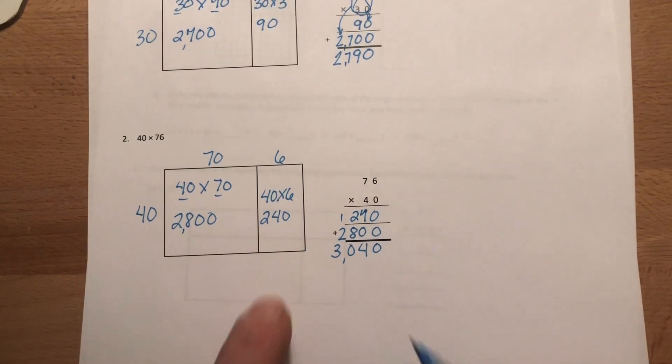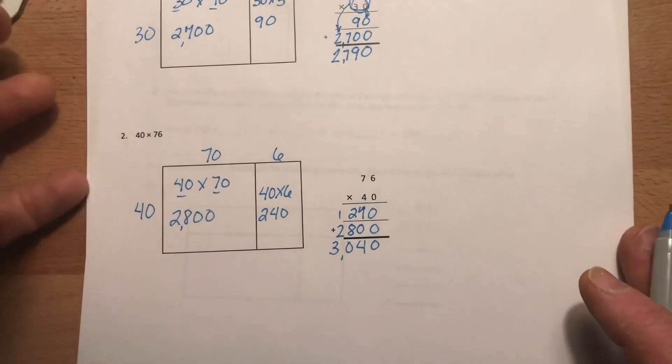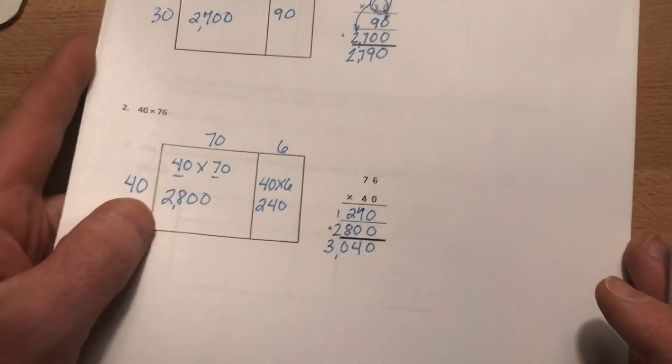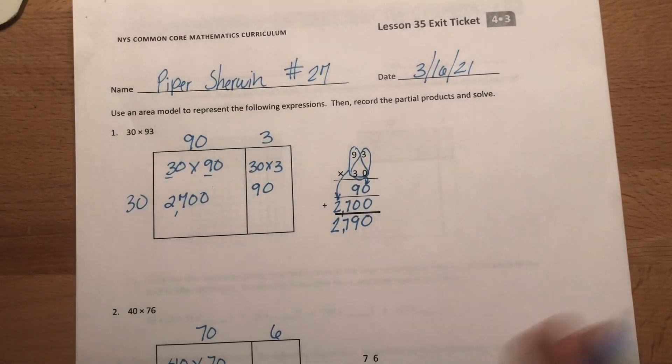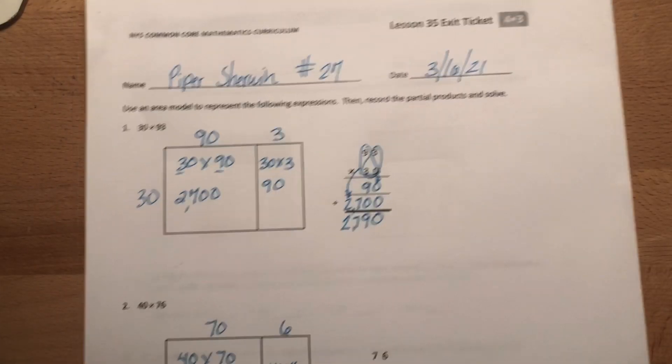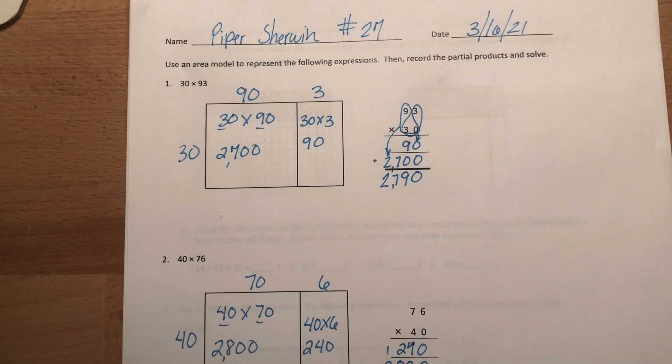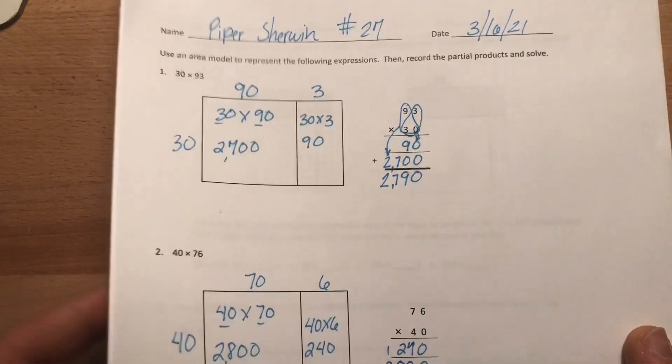Do the partial products over here. End up with 3,040. All right. Hopefully, you did well on that today. Today, we're going to do something very similar, but not with products of 10. We're going to do just two-digit by two-digit multiplication using partial products. We'll be right back with our I can statement to explain that. See you in a bit.